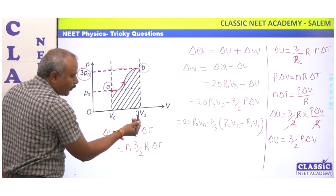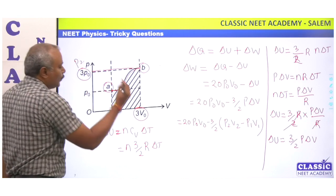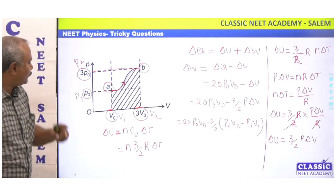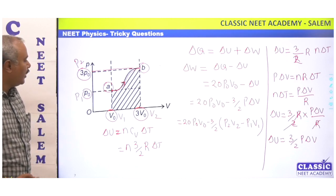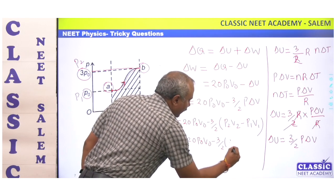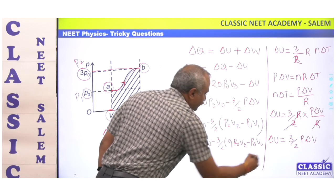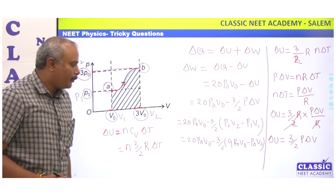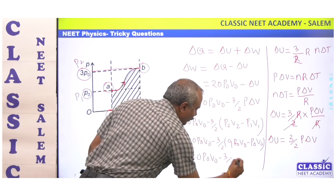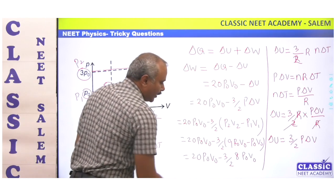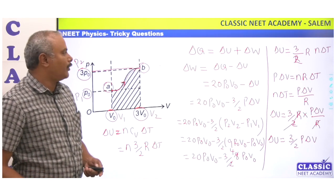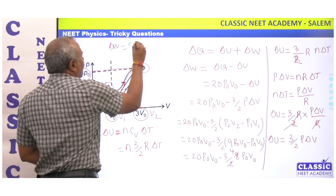At point B, the corresponding pressure is 3P0 and volume is 3V0, so P2V2 = 9P0V0. At point A, P1V1 = P0V0. Substituting: ΔU = 3/2 × (9P0V0 − P0V0) = 3/2 × 8P0V0 = 12P0V0. Therefore W = 20P0V0 − 12P0V0 = 8P0V0.